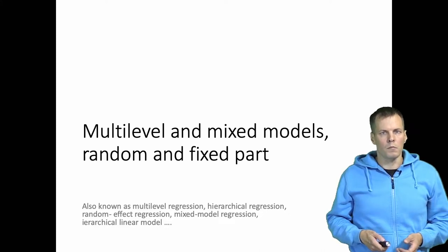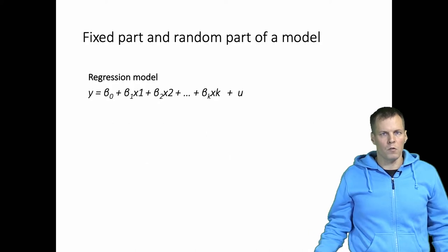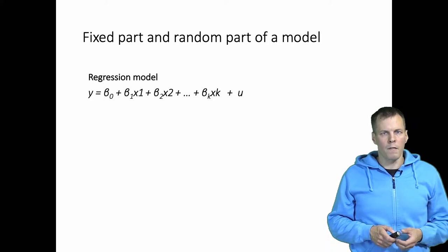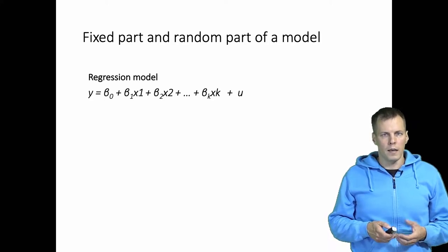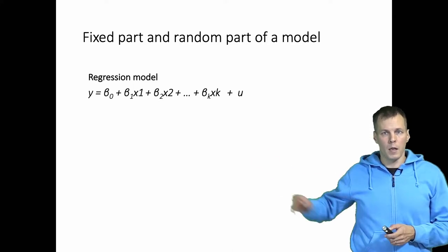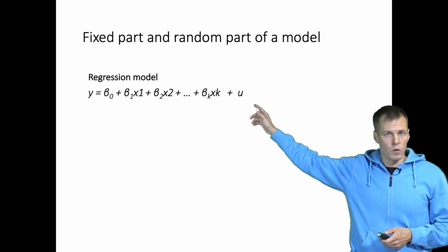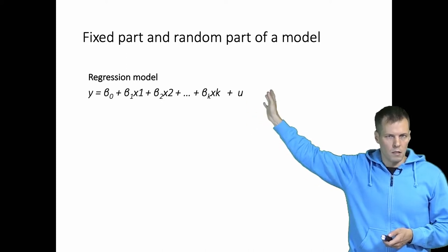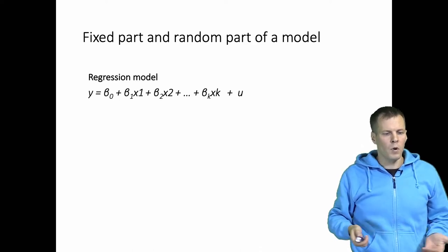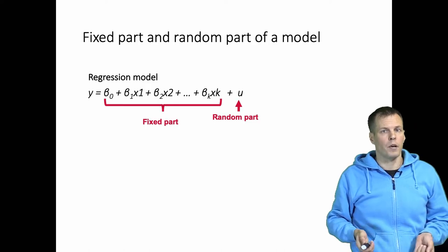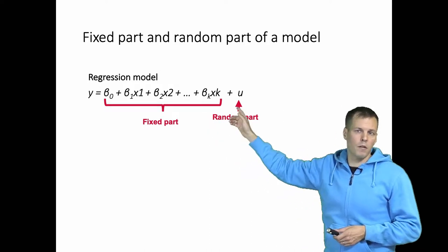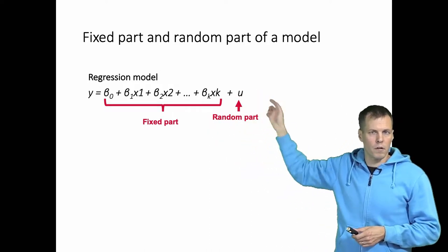Let's start with random effects and fixed effects — what are those? Let's take a look at the basic regression model. We have y, the dependent variable, that is a linear function of the explanatory variables x multiplied by regression coefficients b. Then we have the error term u, which represents variation not explained by the predictor variables x. This model has a fixed part and a random part. The fixed part is the data and the regression coefficients, and the random part is the random variation around the regression line.